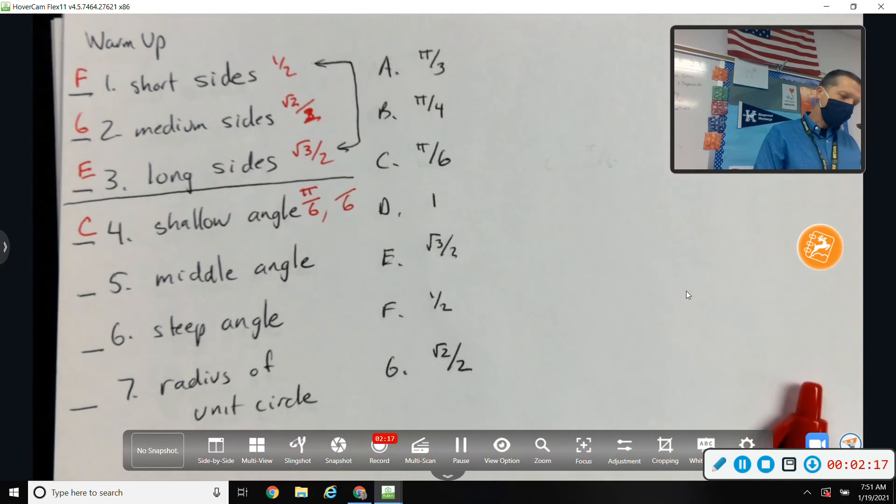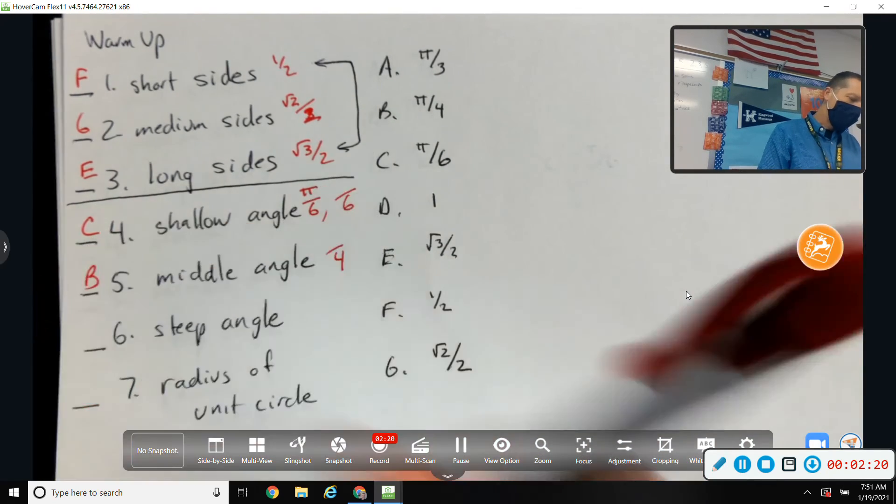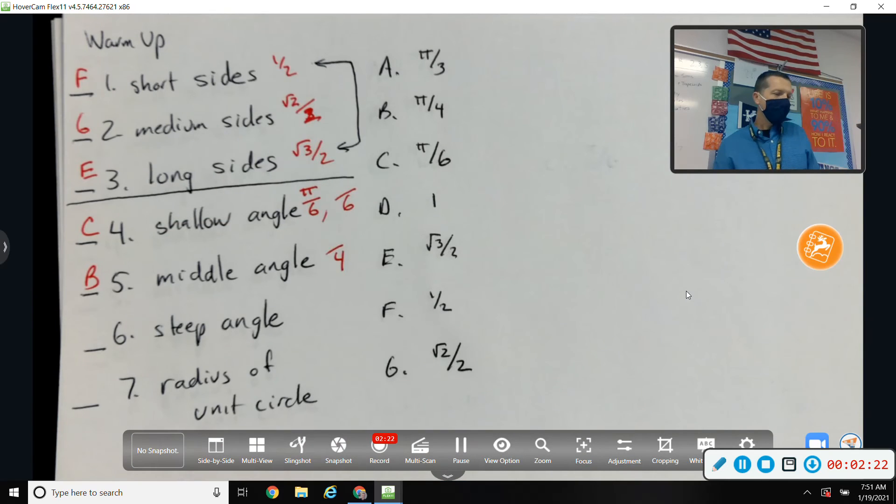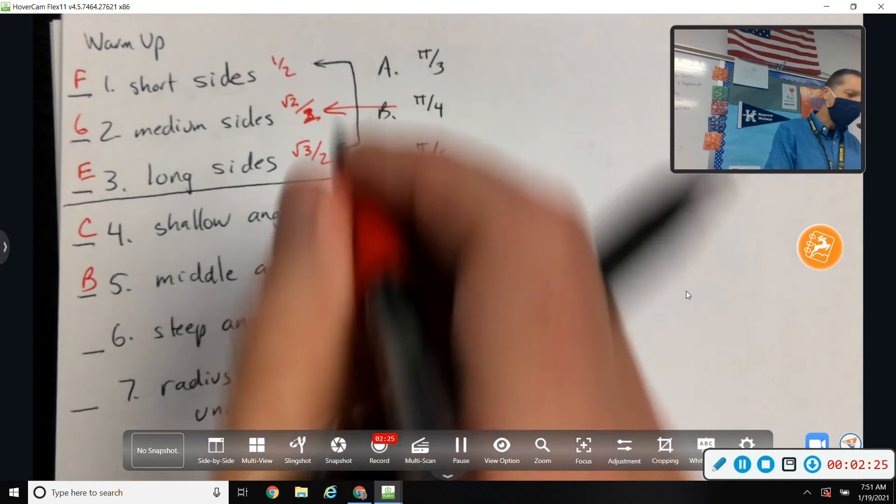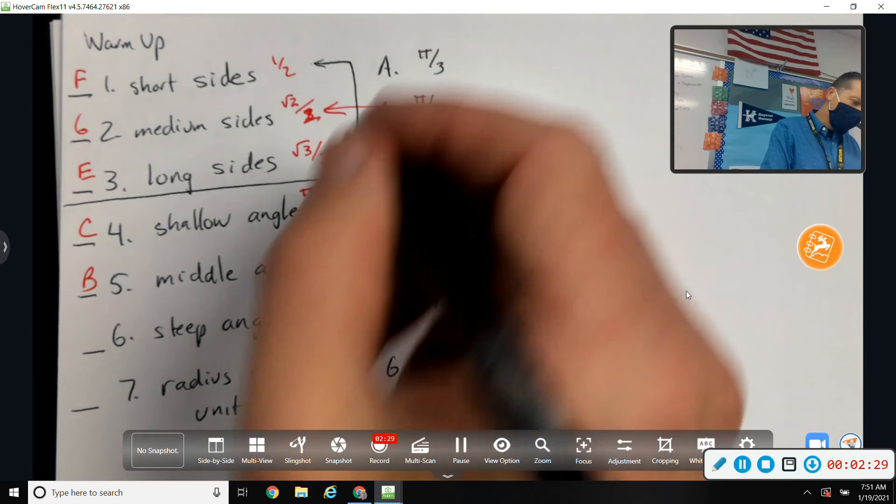All right, how about the middle angles? Which one's that? Anything over 4 is a middle angle. And anything over 4 leads to the medium sides. The steep angle, then, is the over 3s.